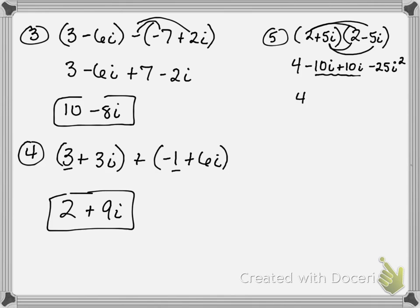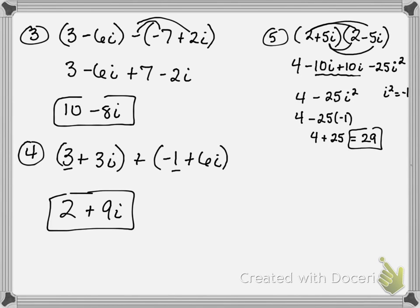So I end up with 4 minus 25i squared. And if y'all remember, i squared is actually the same as negative 1. So this is like saying 4 minus 25 times negative 1, so that turns into 4 plus 25, which is 29. So that answer should be 29.